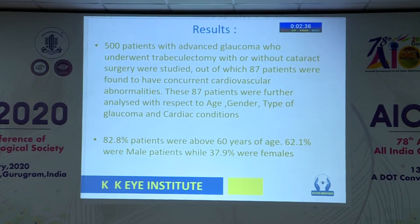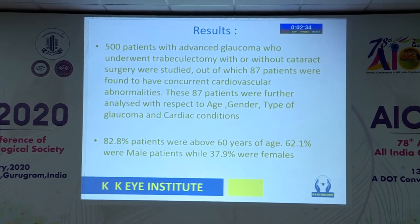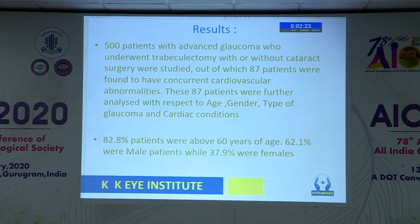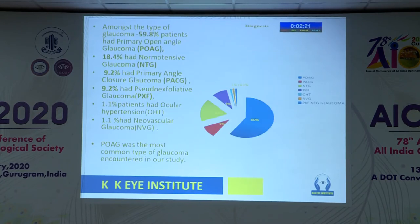Coming to the results, in 500 patients we found 87 patients with concurrent CVS abnormalities. They were further analyzed with respect to age, gender, type of glaucoma, and the cardiac conditions. About 82.8 percent of patients were above 60; 62 were male and 37 were female. As seen in the pie chart, about 60 percent of patients had POAG, followed by NTG, followed by PSCG, PXF, and ocular hypertension. This was the distribution of the type of glaucoma found.